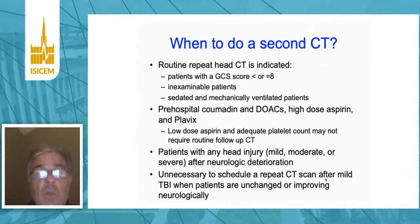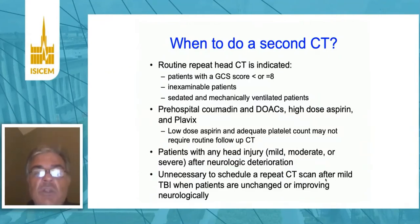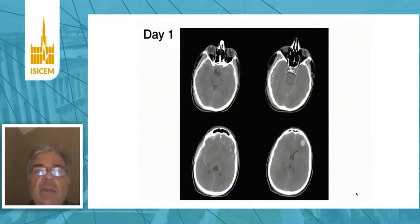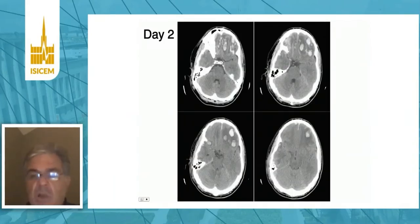Is there a role for follow-up CT? For the most part, there is, particularly in those patients with severe traumatic brain injury, i.e., Glasgow Coma Scale less than 8, patients we're not able to examine because of sedation, those on anticoagulation or with coagulopathy, and any neurologic deterioration. But for the vast majority of patients with mild traumatic brain injury — about 80 percent of TBI — you don't necessarily need a repeat CT scan if the clinical exam is unchanged or the patient is neurologically improving. Here's an example of evolution of pathology: multiple contusions on day one that significantly increased by day two, which may lead to management change such as bifrontal decompressive craniectomy.